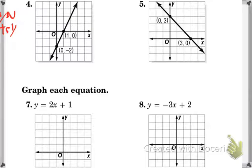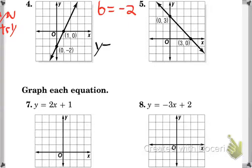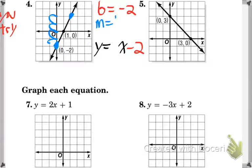For number 4, the y-intercept is where it crosses the y-axis — that value is negative 2. So b, or y-intercept, is negative 2, meaning our equation will be y equals something x minus 2. Now let's find the slope — pick any two points the graph goes through. Counting between two chosen points: it goes up 4 and over 2, so the slope is 4 over 2. That simplifies to 2 over 1, which simplifies to just 2. So the equation is y equals 2x minus 2. That's the answer to example number 4.